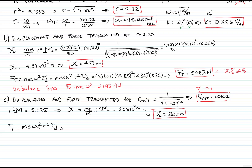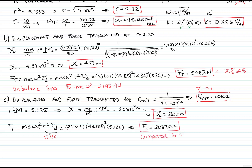Now we calculate the transmitted force for the critical R. This is M·e·ωₙ²·R²·transmissibility factor. Plugging in the numbers, R squared times the transmissibility factor equals 5.126, giving a transmitted force of 2087.6 newtons. Comparing this to the unbalanced force, the ratio is 0.95, meaning 95% of the unbalanced force is transmitted to the foundation, compared to just 25% when R was 2.32.